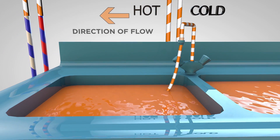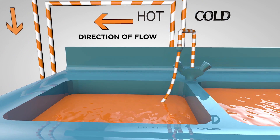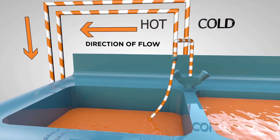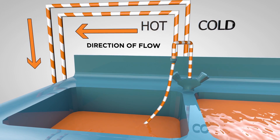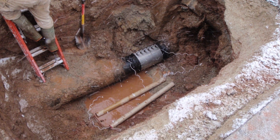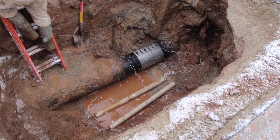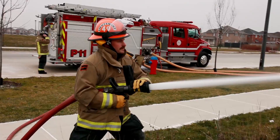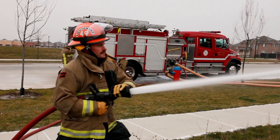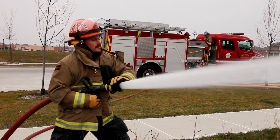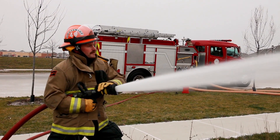Backflow from back siphonage is caused by a negative pressure, such as a drop in the water main pressure. Events that can cause back siphonage include a water main break, power outage, or a high rate of water removal from the system, such as firefighting.